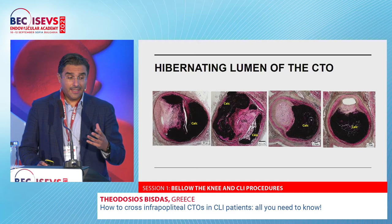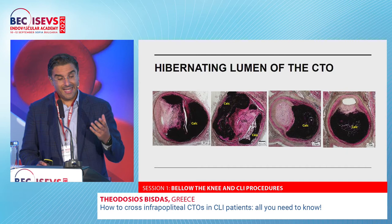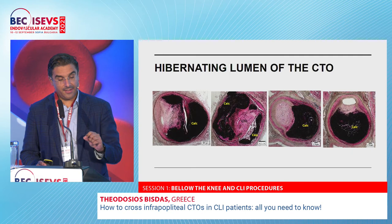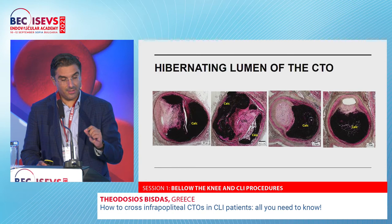Regarding the hibernating lumen of the CTO — there is always a small channel, and there is always thrombus inside CTOs. You cannot see anything, but it doesn't mean there is nothing there. That's why the most important thing is to penetrate the proximal or the distal cap.